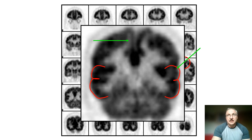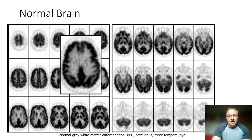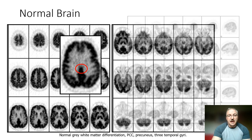We would say that this pattern is not suggestive of the presence of an intrinsic neurodegenerative dementia. Looking again at the normal brain, we note this homogeneous pattern, the relative maintenance of the grey-white matter differentiation, and no comparative loss of activity. Here is the posterior cingulate gyrus.